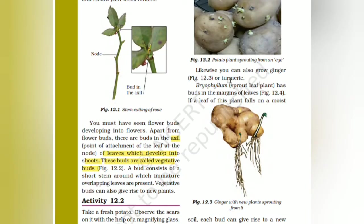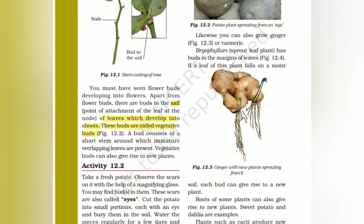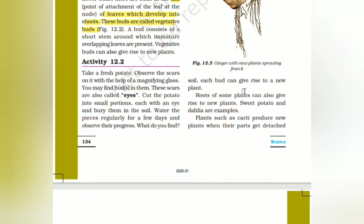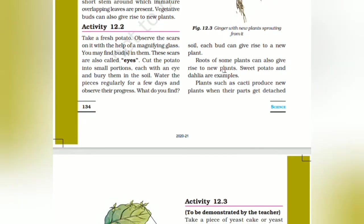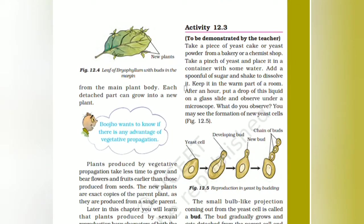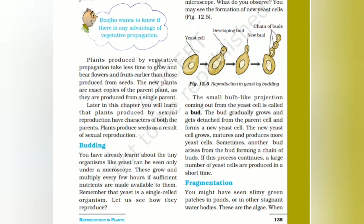Likewise, you can also see this in ginger and turmeric. Bryophyllum, the sprout-leaf plant, has buds in the margins of the leaves. If a leaf of the plant falls on moist soil, each bud will give rise to a new plant. Roots of some plants can also give rise to new plants — sweet potato and dahlia are examples. Plants such as cacti produce a new plant when their parts get detached from the main plant.